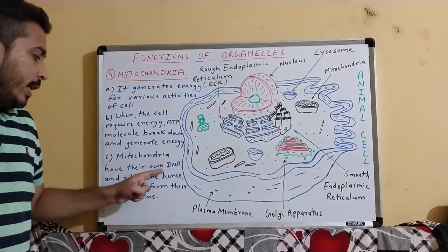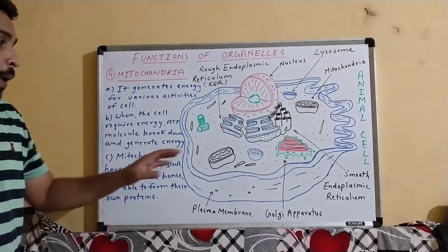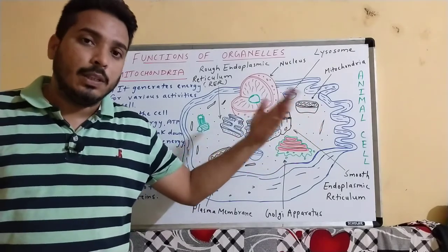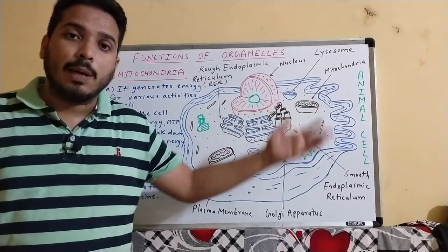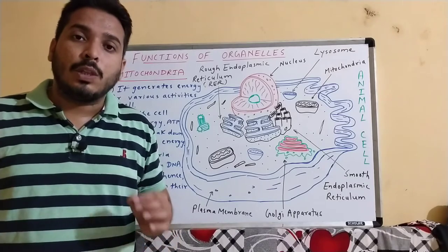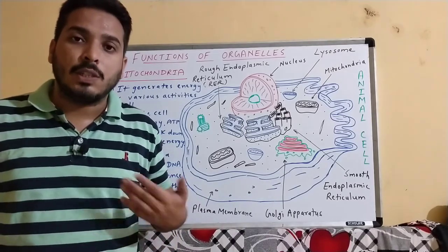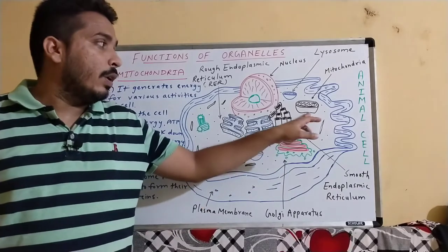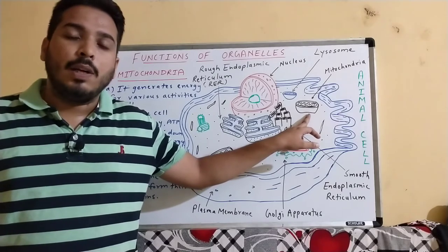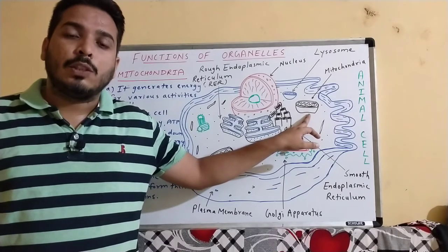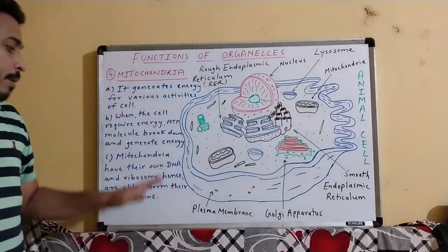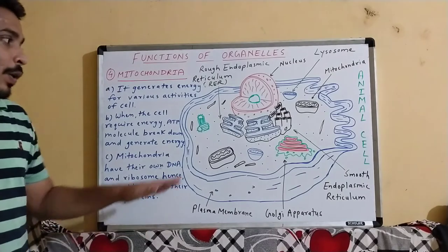Mitochondria have their own DNA and ribosomes. This makes mitochondria a unique organelle with its own DNA. The ribosomes present in mitochondria are used in the manufacture of protein. So these are the functions of mitochondria.